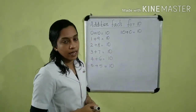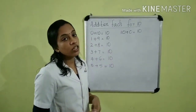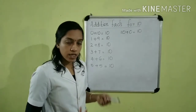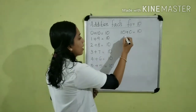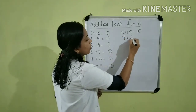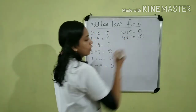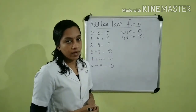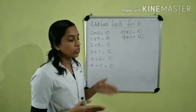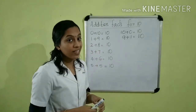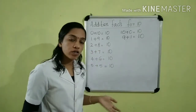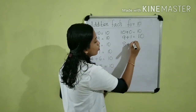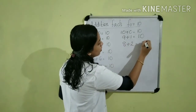Then, 1 plus 9. We can change the order of these numbers. That is, 9 plus 1 which is equal to 10. So we can write, 9 plus 1 is equal to 10. Then, 2 plus 8 is equal to 10. We can change 2 plus 8 to 8 plus 2, which is also equal to 10. So we can write, 8 plus 2 is equal to 10.